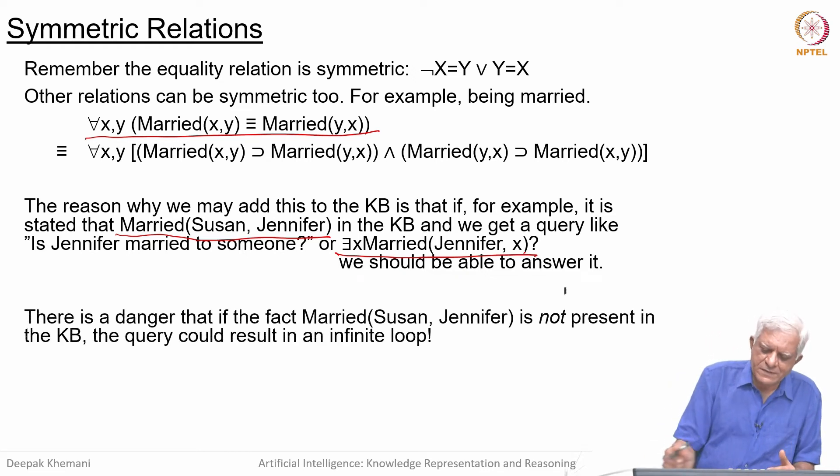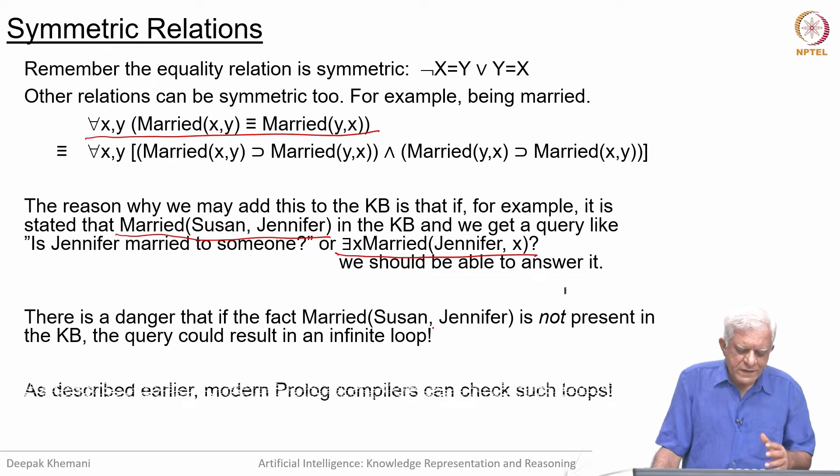But there is a flip side. If the fact that Susan is married to Jennifer was not in the knowledge base, and you ask the query 'is Jennifer married to someone,' we will continue to use the symmetry axiom in perpetuity. We take the query, use the symmetry axiom to convert it, and since we cannot answer it, we use the symmetry axiom again. This process will go on and on—programs can go into infinite loops. Modern compilers can try to catch such loops and stop them.